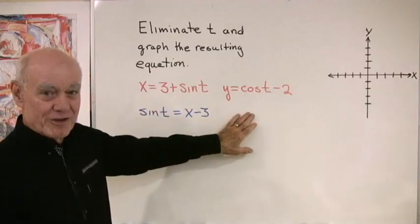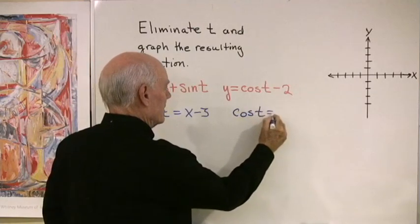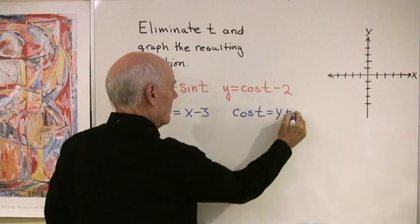Over here I'll solve for cosine t, and what I'll get is cosine t is equal to y plus 2.